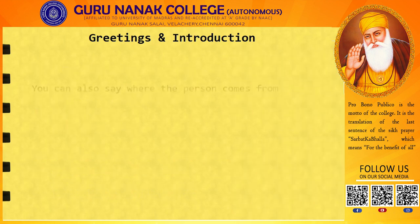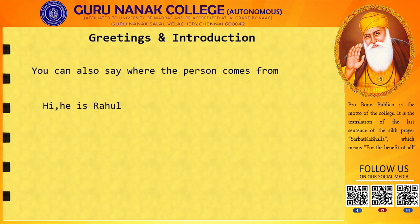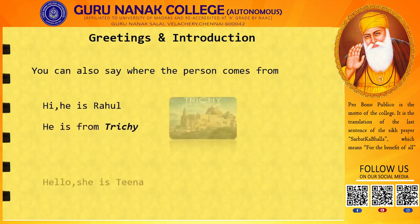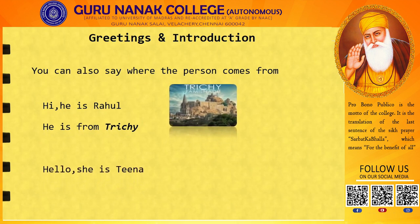You can also say where the person comes from. For example: hi, he is Rahul — he is from Trichy; hello, she is Tina — she is from Mysore.